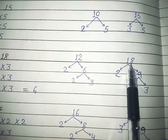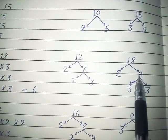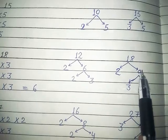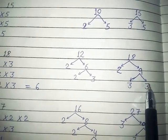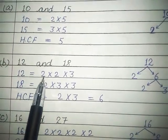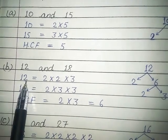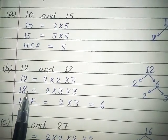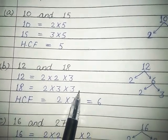Clear, students? Now this way you will make the factors of 18. 2 into 9 is 18, and then 3 into 3 is 9. So now you will write the factors: 12 factors are 2 into 2 into 3, and 18 factors are 2 into 3 into 3.